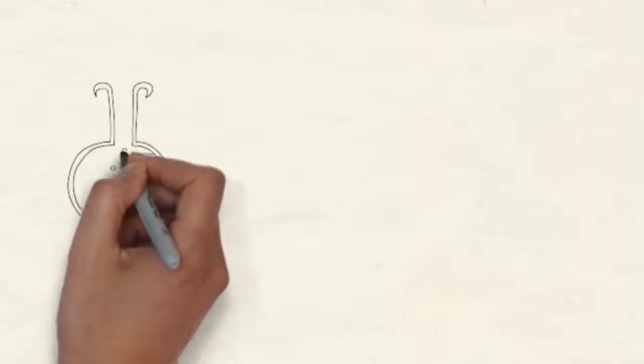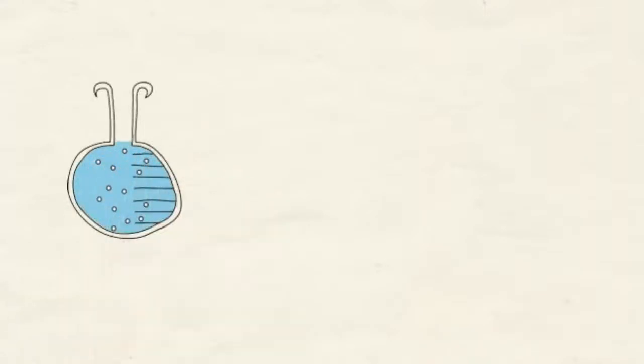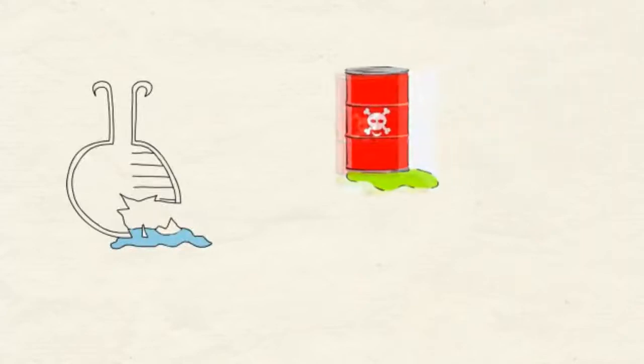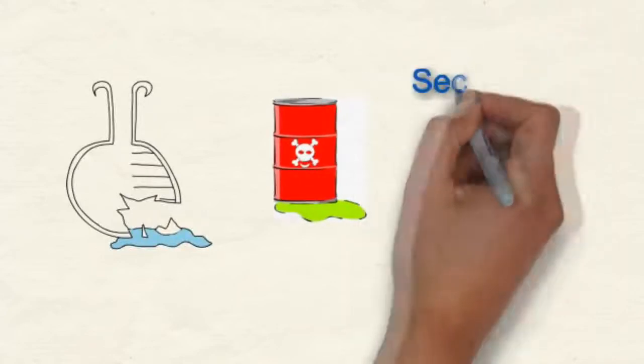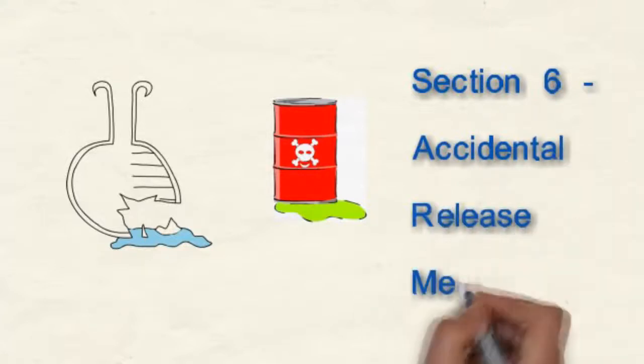If the product is accidentally spilled or otherwise released from its container, how do we clean it up? What materials can we use? And how do we dispose of everything properly? Should we wear masks or gloves? Eye protection? All this should be listed under Section 6, Accidental Release Measures.